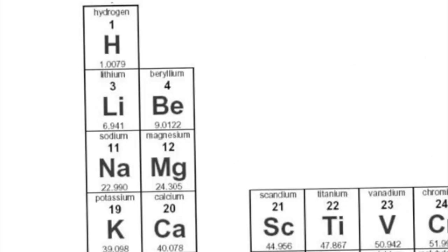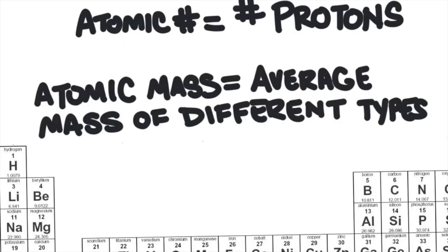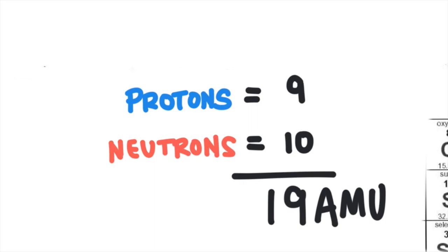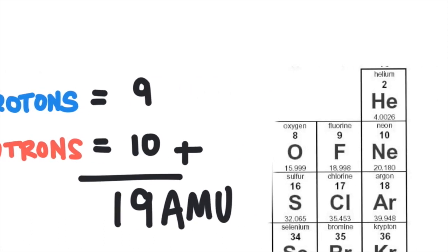There's another number on the periodic table called the atomic mass, or atomic weight. It is the average mass of all the different types of that particular element. For example, an element that has 9 protons and 10 neutrons would have a mass of 19 AMU — we just add up the number of protons and neutrons to get its mass. We can look up atomic number 9 and find that the element is fluorine.